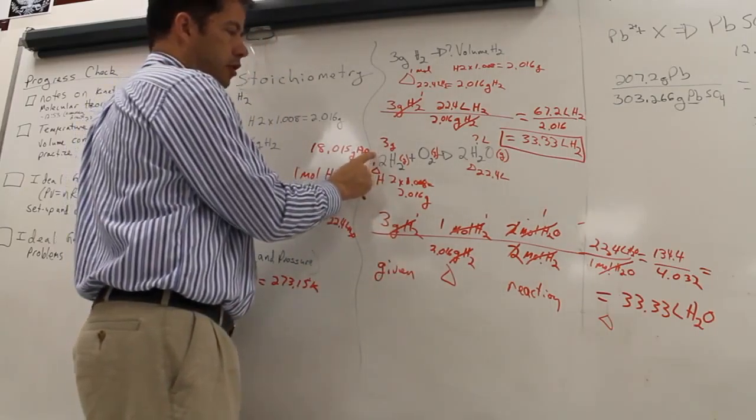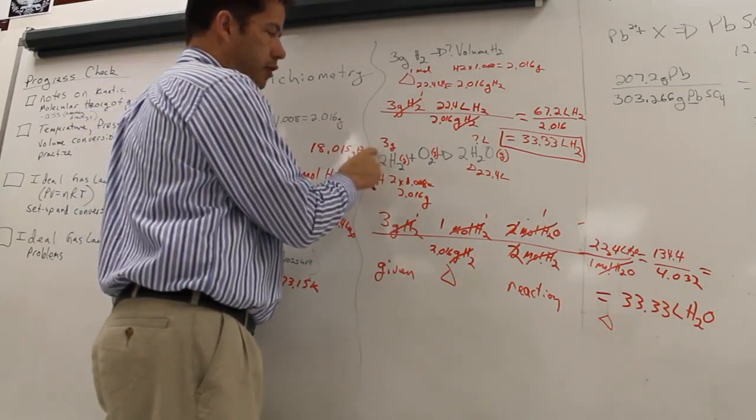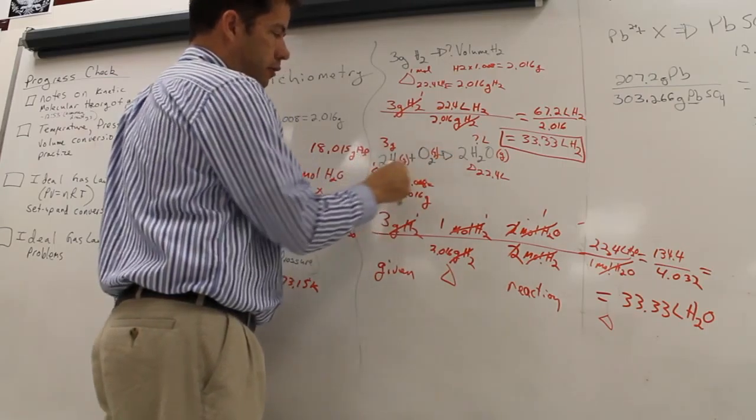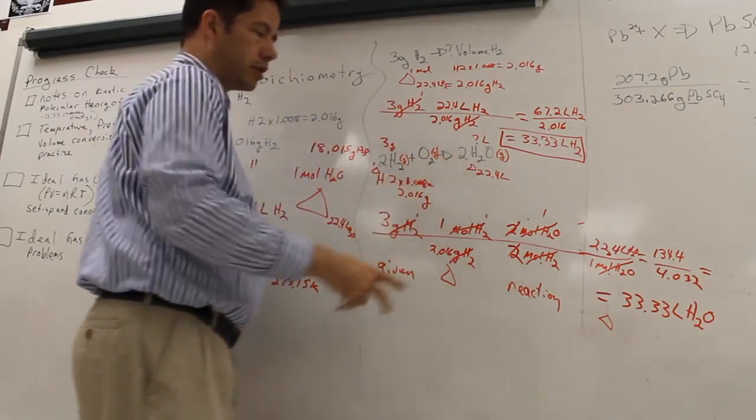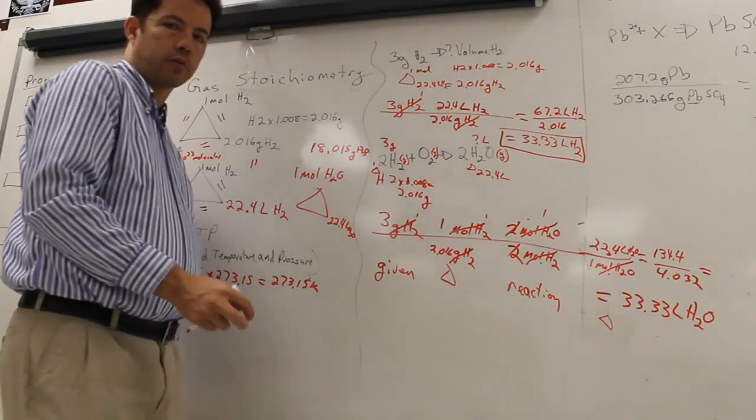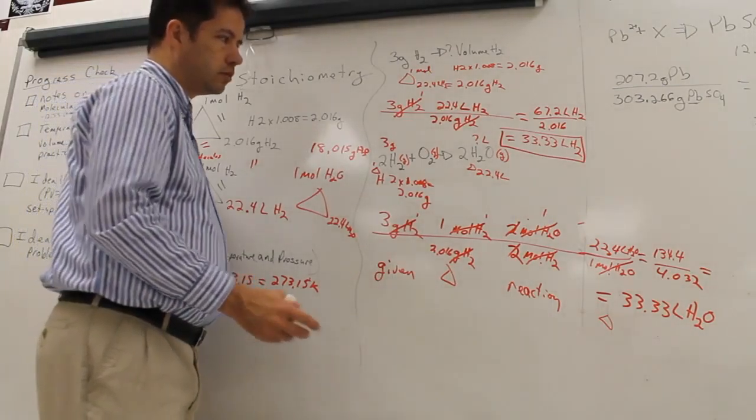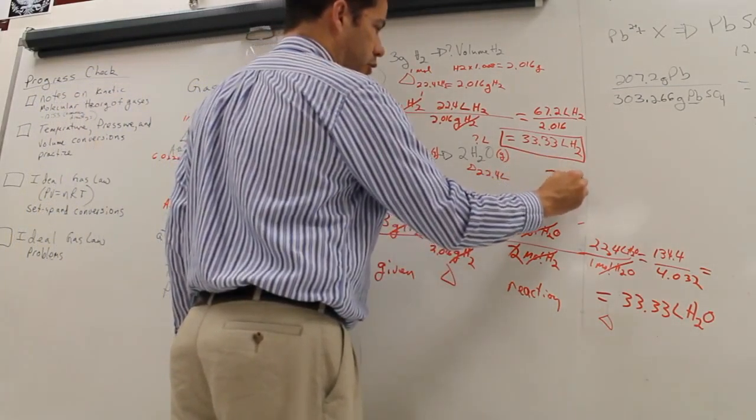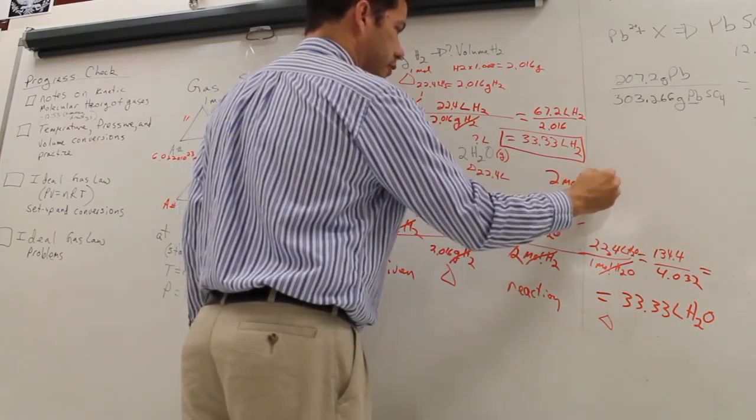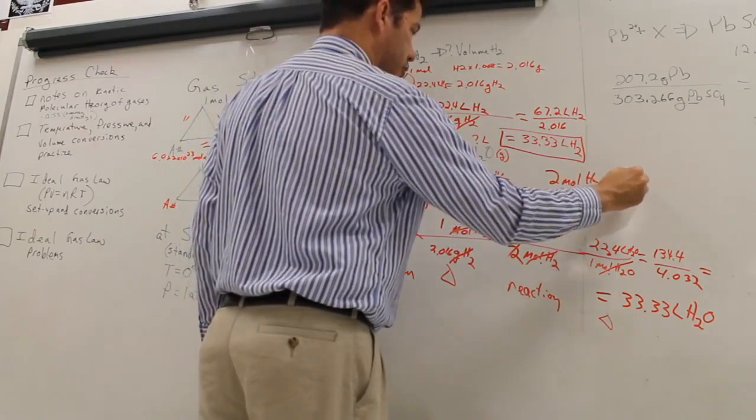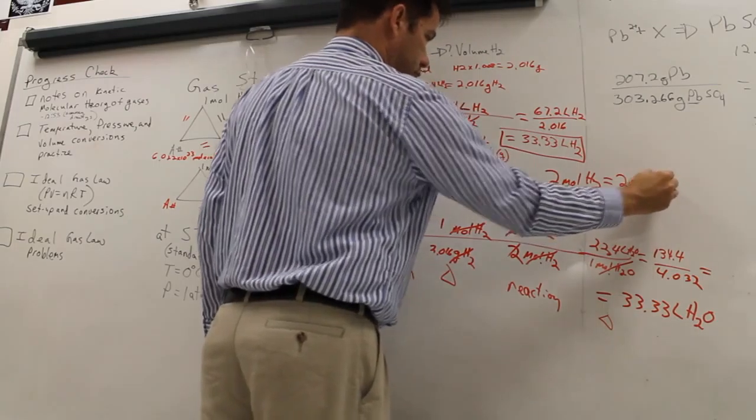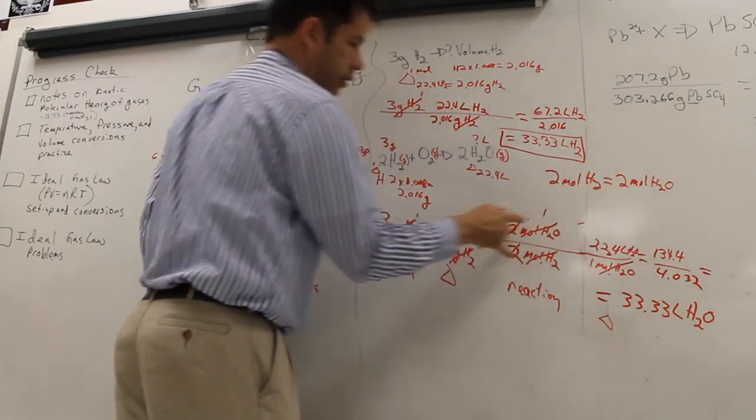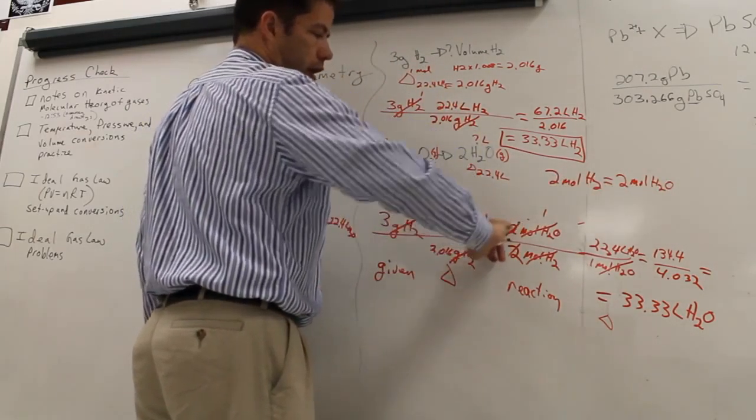And remember, these are ratios. 2 moles of H2. For every 2 of those, I should get 2 of those. For every 1 of those, I should get 2 of those. That's where the reaction conversion comes from. In other words, 2 moles of H2 is going to produce 2 moles of H2O. And I can take that and put it on the line however I need to.